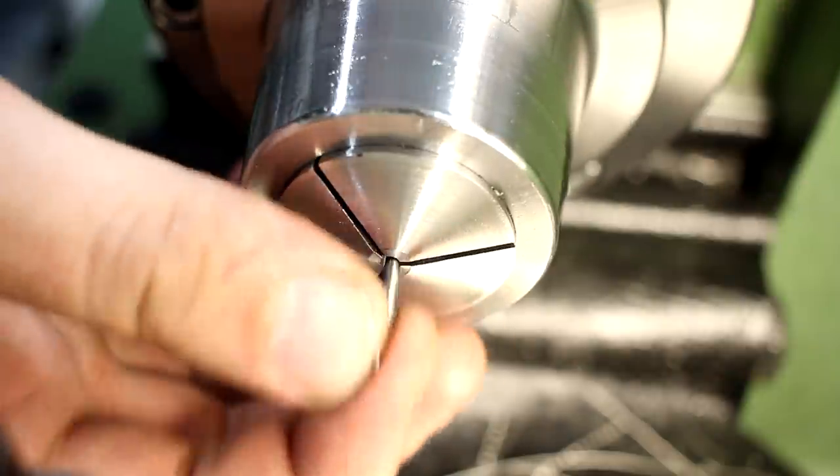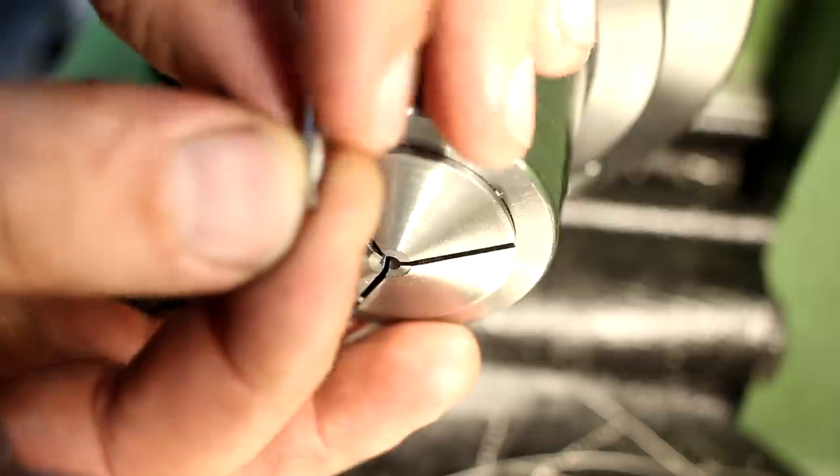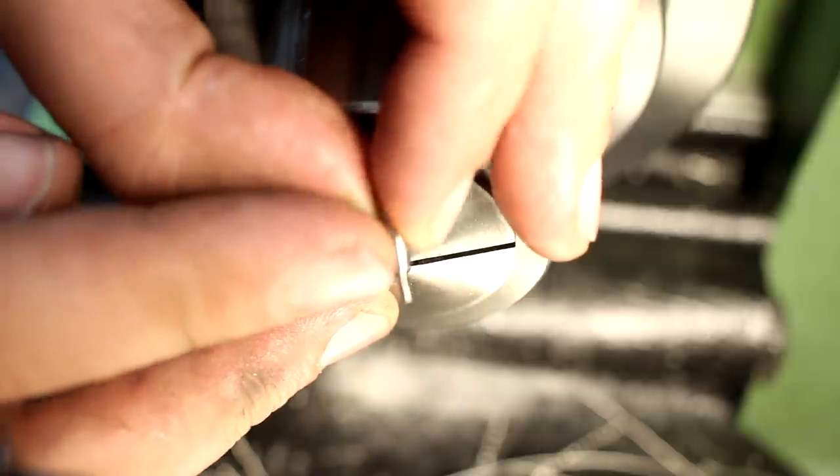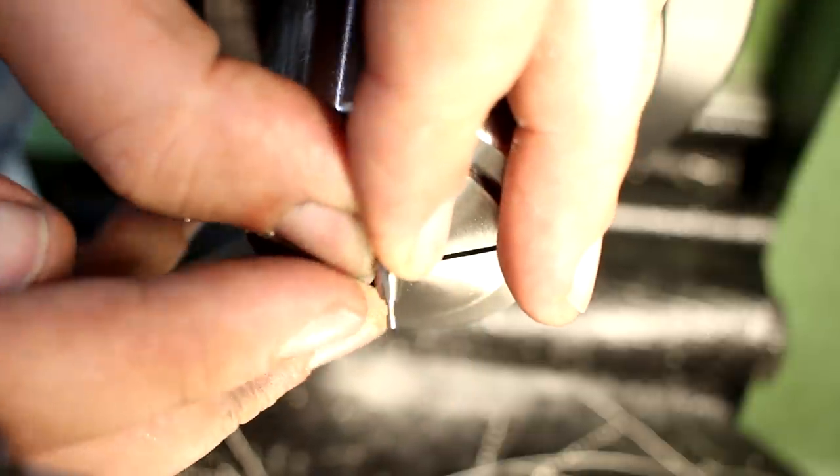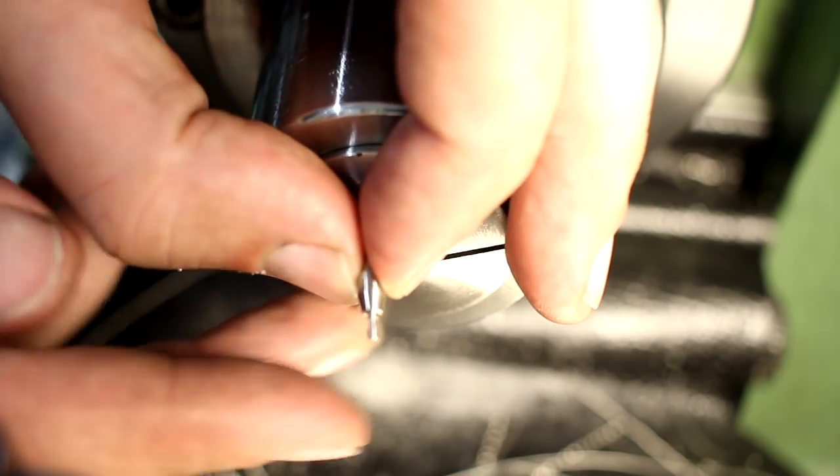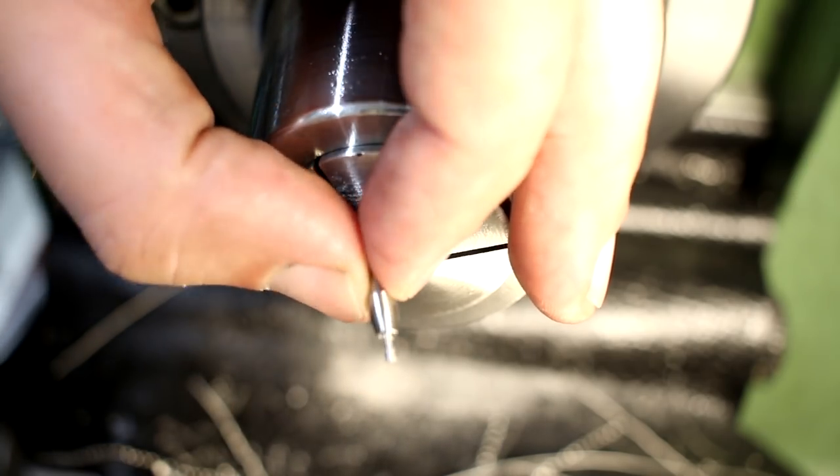Pop it out of the chuck. And the small tip, the pointy tip will be ground on the tool and cutter grinder.